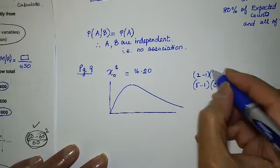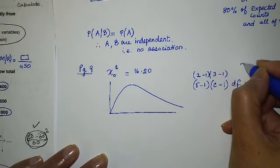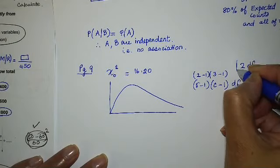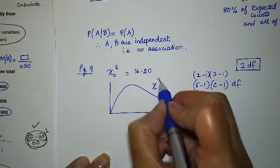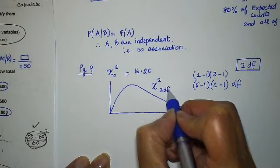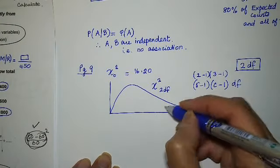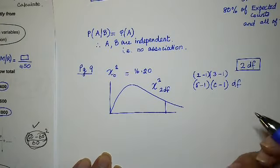And I have R minus 1 times C minus 1 degrees of freedom, where R is the number of rows, C is the number of columns. So I have two rows, so 2 minus 1, and three columns, 3 minus 1. So 1 times 2 is still 2 degrees of freedom for this problem as well.